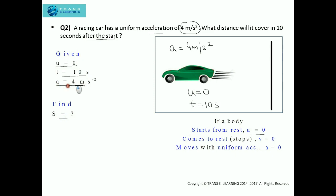The acceleration is positive because the initial velocity is 0 and the car is accelerating — the final velocity is increasing at a uniform rate. The units are consistent: time in seconds and acceleration in meter per second squared, so no conversion is needed. A common mistake: uniform acceleration does not mean acceleration is 0. Acceleration is 0 only when the body moves with uniform velocity, i.e., when initial and final velocities are the same. Here the final velocity is not given, so we do not consider that.